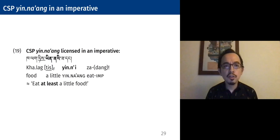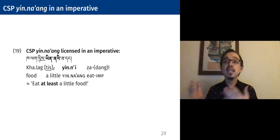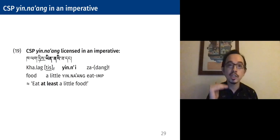Third, we can also see yinang in imperatives. The context that my speakers and I were discussing is a context where you're talking to a difficult child, sort of pleading with them — you want them to eat more, but you say 'eat just a little bit of food, and then we can be done.' And so you might use an imperative like this with a concessive scalar, associating with the lowest point on the scale.